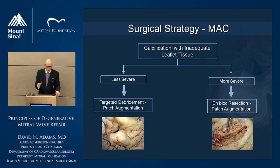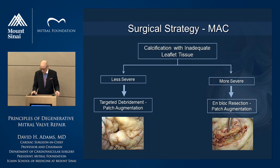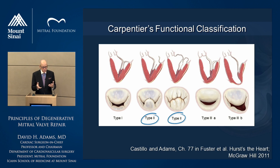Usually it's some combination of both techniques if the calcification is really severe. You also have targeted debridement and patch augmentation if the calcification extends into the leaflet. The least common but most talked-about approach is en-bloc resection — something we really reserve for very select cases. We've really learned to work around the calcium rather than directly at it.